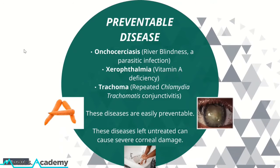In preventable disease, there's onchocerciasis, xerophthalmia, and trachoma. All of these diseases are easily preventable through measures like adequate nutrition, good personal hygiene, and insecticides. Yet all of them, left untreated, can progress to quite serious corneal damage.